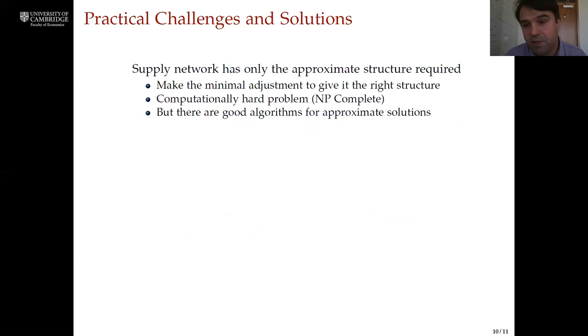So far we've talked about what's possible in principle. Practically there are several challenges to overcome but also solutions to these challenges. First, supply networks only have the approximate structure that we need. To give them the right structure we need to prune them, and we want to prune them in the minimal way possible. Now computationally that's a hard problem, but there are good algorithms that can generate approximate solutions and we can check that these algorithms work well. So in the case of Uganda we only need to ignore about four percent or a little less than four percent of the value of transactions in order to get the network into the right structure that we need. And the number is similar for Belgium.